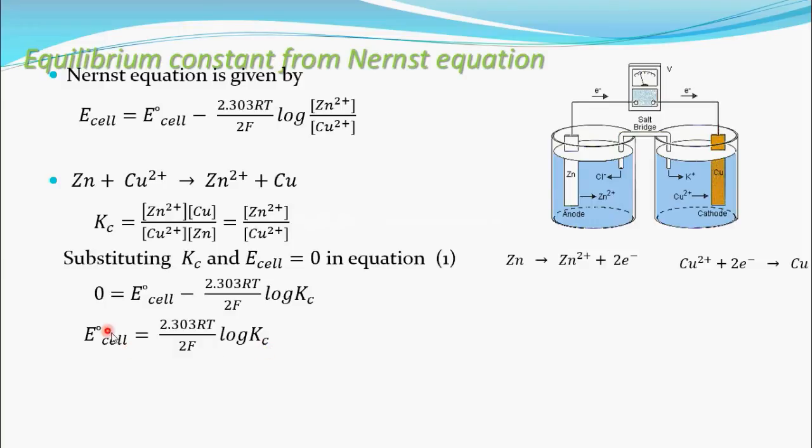If you know the equilibrium constant, then you can find standard electrode potential of this cell, or if you know the standard electrode potential of this cell, then you can find equilibrium constant. See this is for this Daniel cell. Let's see for in general galvanic cell.